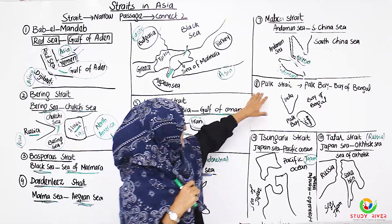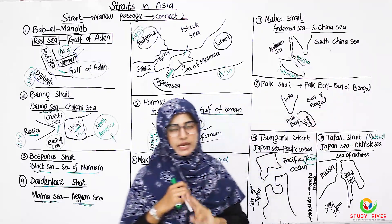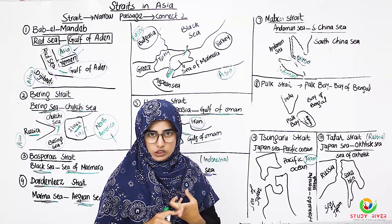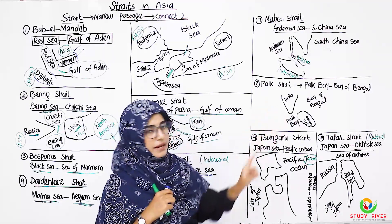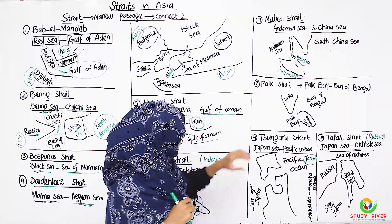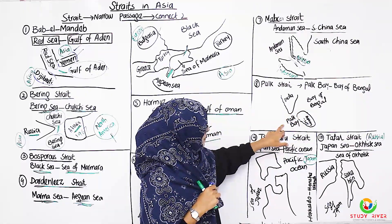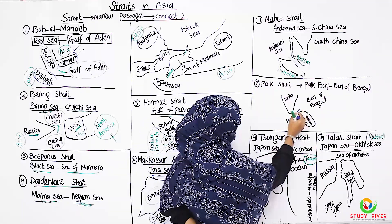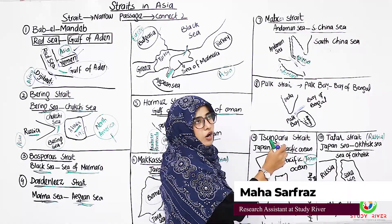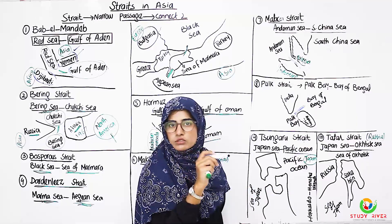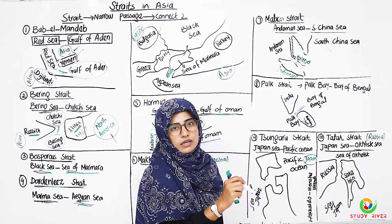The eighth strait is Palk Strait. Palk Strait connects Palk Bay and the Bay of Bengal. It is a narrow strip of water. The land masses on either side are India and Sri Lanka.